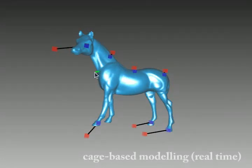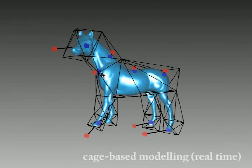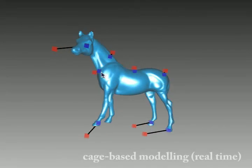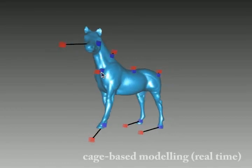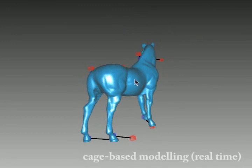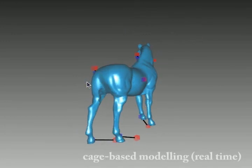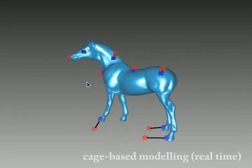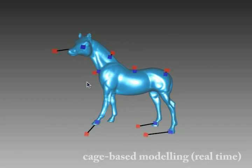We express constraints directly over the enclosed surface and we transfer them to the cage using this indirection. The Laplacian operator is only defined on the cage mesh. We solve a linear sparse system of equations to retrieve the cage expressing the desired deformation.